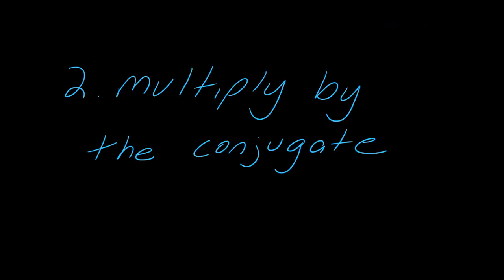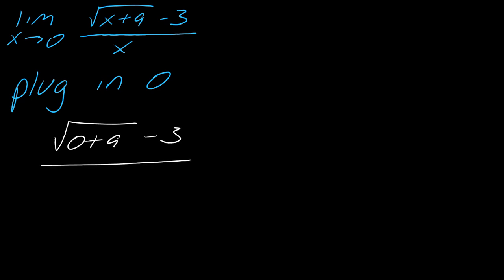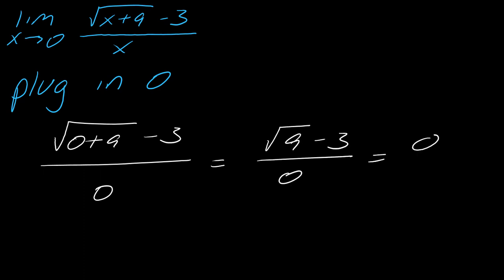Now let's talk about the next trick: multiplying by the conjugate. When you plug 0 into this problem, you get the square root of 9 minus 3 over 0, which gives 0 over 0. That's a hint that you should think about tricks, and this is where the conjugate comes in.